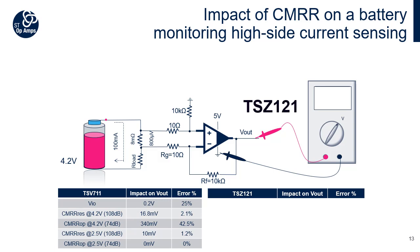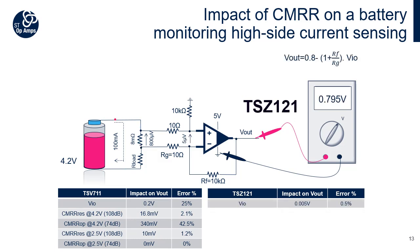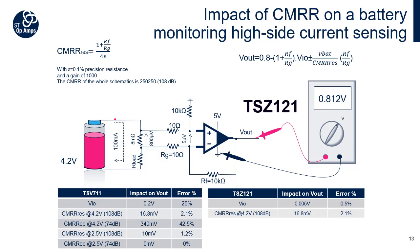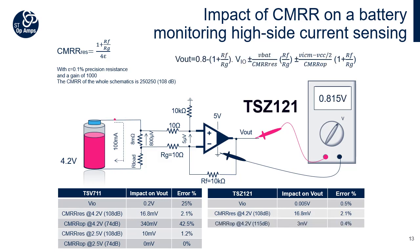Let's keep this application in mind but replace the TSV711 with the TSZ121 op-amp. The theoretical value of the output is still 800 mV. The TSZ121 has a maximum VIO of 5 µV at 25°C, so considering this error and a gain of 1000, the output will be 795 mV — an error of only 0.5%. As the resistors are still at 0.1% precision, the error on the output adds 2.1%. The TSZ121 has a CMRR of 115 dB, so its own impact on the total output error is not predominant. When VBAT equals 4.2 V, it represents only 3 mV on the output, just 0.4% error.